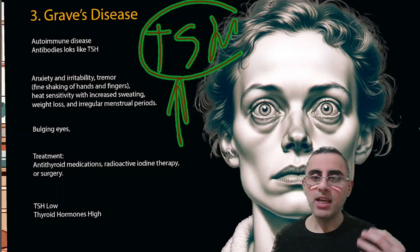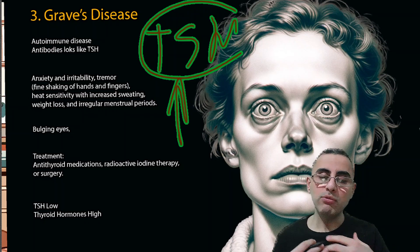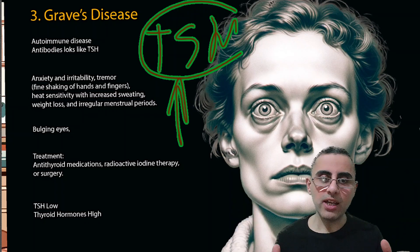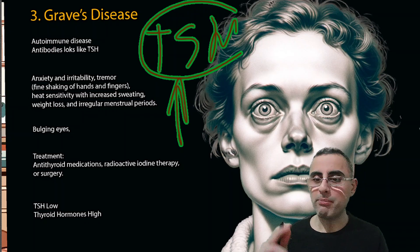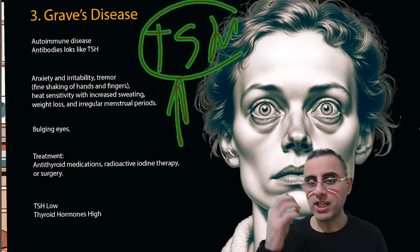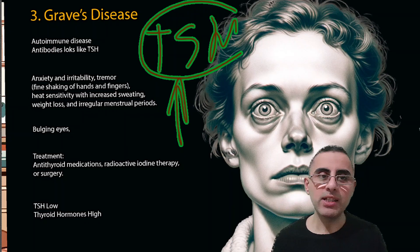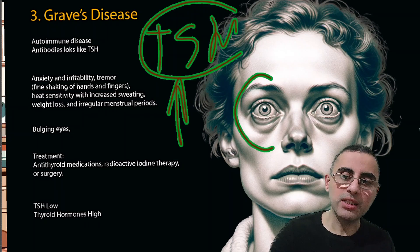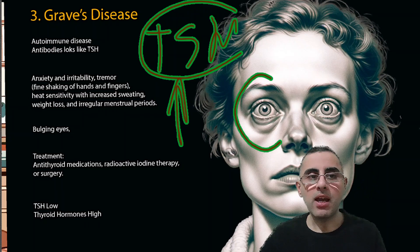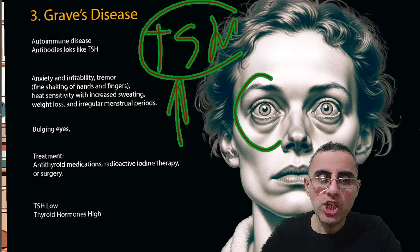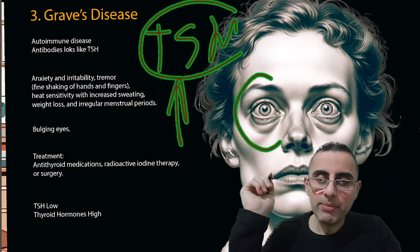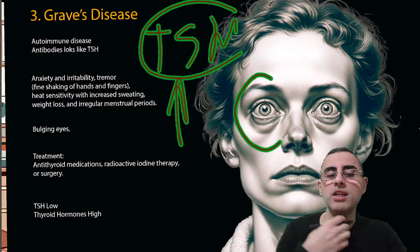The person with Graves' disease has heat sensitivity and is unable to tolerate heat, always feeling hot even in winter. Increased sweating and weight loss are also common. Irregular menstrual periods are possible, and bulging eyes — known as Graves' ophthalmopathy — is a characteristic feature of Graves' disease.